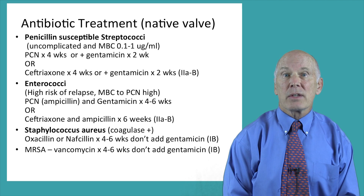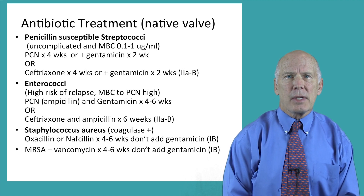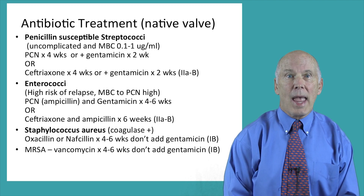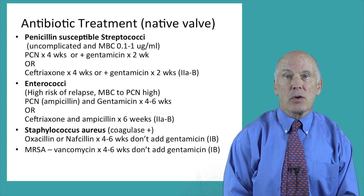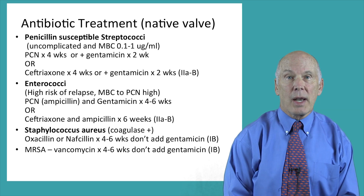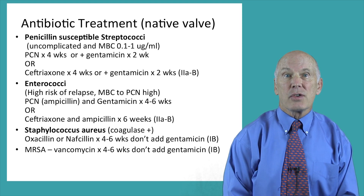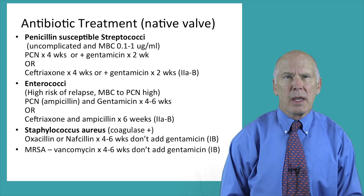Enterococci has a high risk of relapse and the MBC for penicillin is high. Therefore, ampicillin and gentamicin should be given for four weeks. Gentamicin should be dosed three times per day rather than once a day. Ceftriaxone and ampicillin for six weeks is also effective; these are 2AB recommendations.